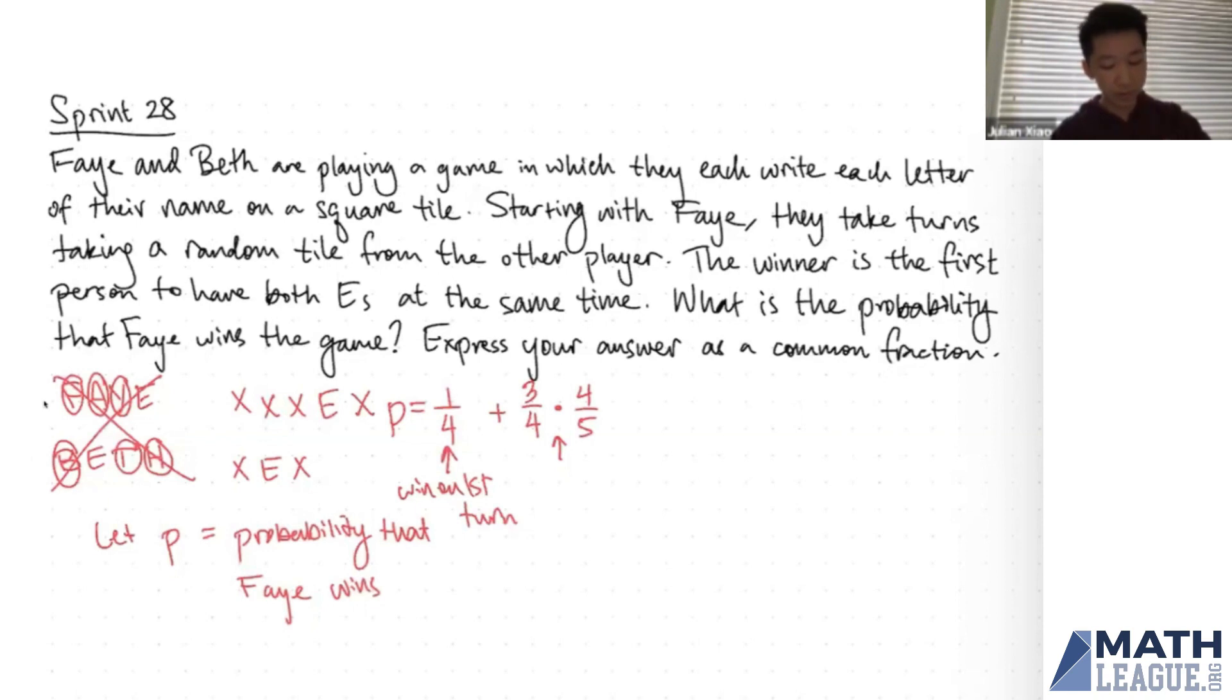So once this has happened, this means that Faye has chosen an X from Beth's hand and Beth has now chosen an X from Faye's hand. And now the game looks like this again. This is just how we started. So now you can ask yourself, what happens now? What is the probability that at this point Faye wins the game?